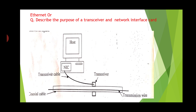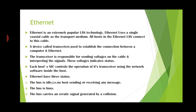Next, we will see the Ethernet. So on this also, you are getting the question for 5 marks. In this diagram, in the host there is a NIC card and through the transceiver cable, they are connected to the transmission media. At the transmission media, there is a transceiver machine. Using that only, they are doing the communication between the host and the transmission media.